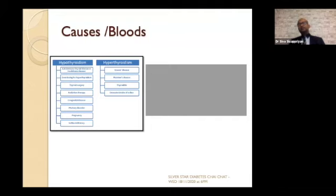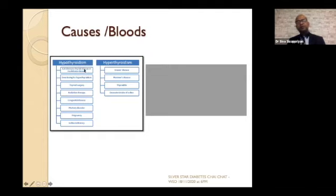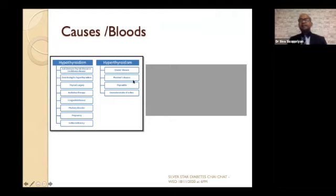Let me go through some important causes of thyroid problems. The commonest cause of underactive thyroid is inflammation of the thyroid gland itself — often called Hashimoto's thyroiditis, named after the Japanese physician who described it. Structural damage to the thyroid gland is the second cause. For overactive thyroid, the commonest cause is Graves' disease, named after the person who described it. Other inflammatory conditions can also cause overactive thyroid.